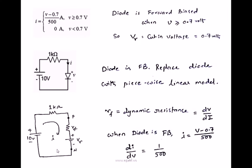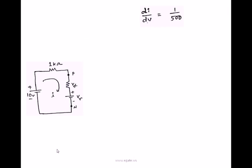We need RF, dynamic resistance, which is dV by dI. So simply take the reciprocal of this one. That is RF equals dV by dI, which equals 500 ohms.